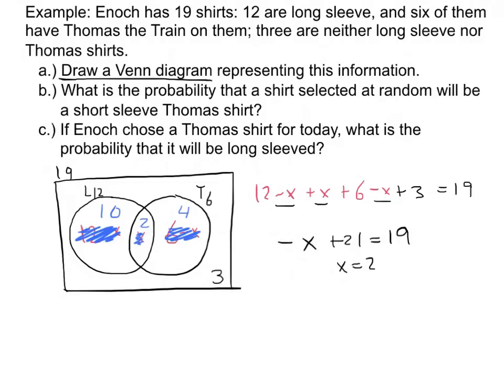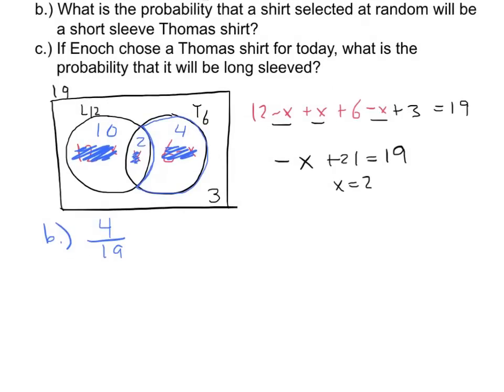The thing I love about Venn diagrams is once you have all the pieces labeled, the questions become so simple. Question B asks: what is the probability that a shirt selected at random will be a short-sleeved Thomas shirt? That means not long-sleeved but Thomas — the Thomas crescent, which has 4 shirts. Total is 19, so the probability is 4 out of 19. We don't need any fancy formulas — just look at the Venn diagram.